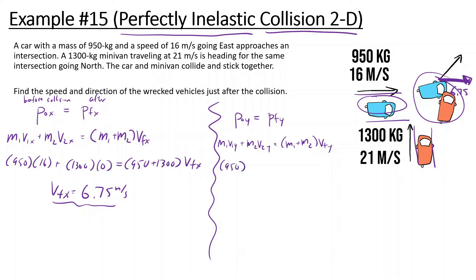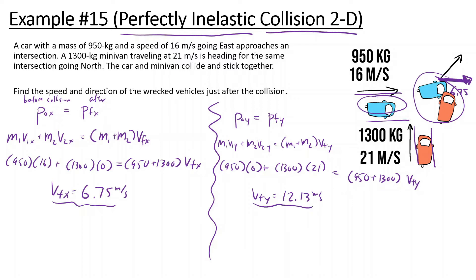M1 is 950, but the first car is only going in the X direction, so its Y velocity is zero. Plus M2, which is 1300, moving at 21 meters per second in the Y direction. This equals 950 plus 1300 times the final velocity in Y. That gives us 1300 times 21 divided by 2250, which is 12.13 meters per second in the Y direction.